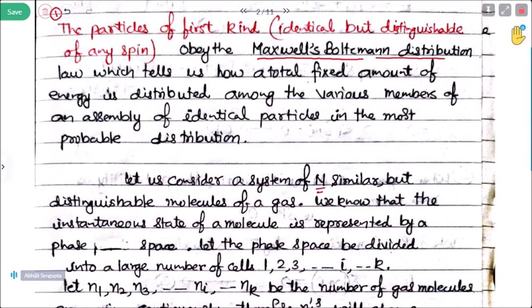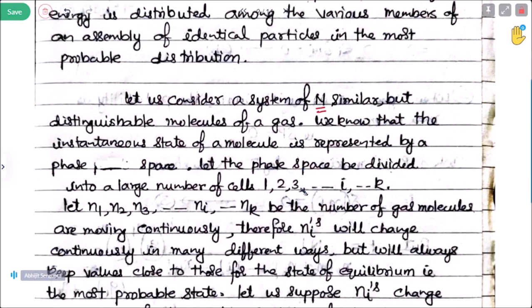We know that the instantaneous state of a molecule is represented by phase space — position and momentum space. Let the phase space be divided into a large number of cells represented by symbols 1, 2, 3 up to i and up to k. The number of molecules in each cell is n1, n2, n3 up to ni and nk. Gas molecules are moving continuously, therefore these ni values will change continuously.